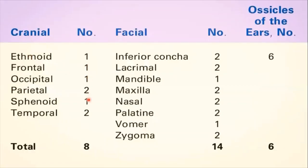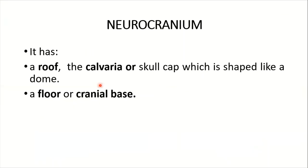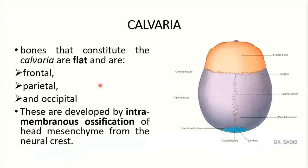To summarize the neurocranium: eight bones total — four single bones: ethmoidal, frontal, occipital, and sphenoidal; and two paired bones: temporal and parietal. The neurocranium has two parts — the roof, which is the calvaria or skull cap, and the floor, which is the cranial base. The roof is formed by the frontal, parietal, and occipital bones by intramembranous ossification.